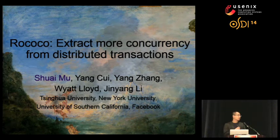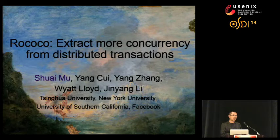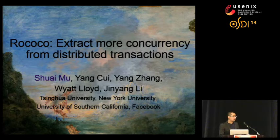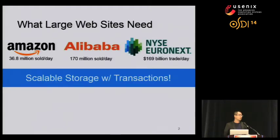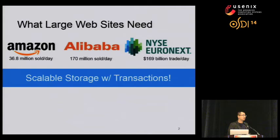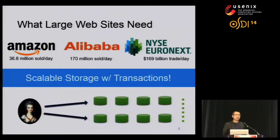I am very glad to introduce our recent work, Rococo, which is a new concurrency control protocol aiming to improve performance in strictly serializable distributed transactions. Our work targets large commercial and financial systems, which often need to handle hundreds of millions of transactions per day. The amount of data these systems need to process is huge and keeps increasing, which means we need these transactions to be scalable. We can shard the data into many independent different servers and transform a user's request into a distributed transaction running across a subset of these servers.